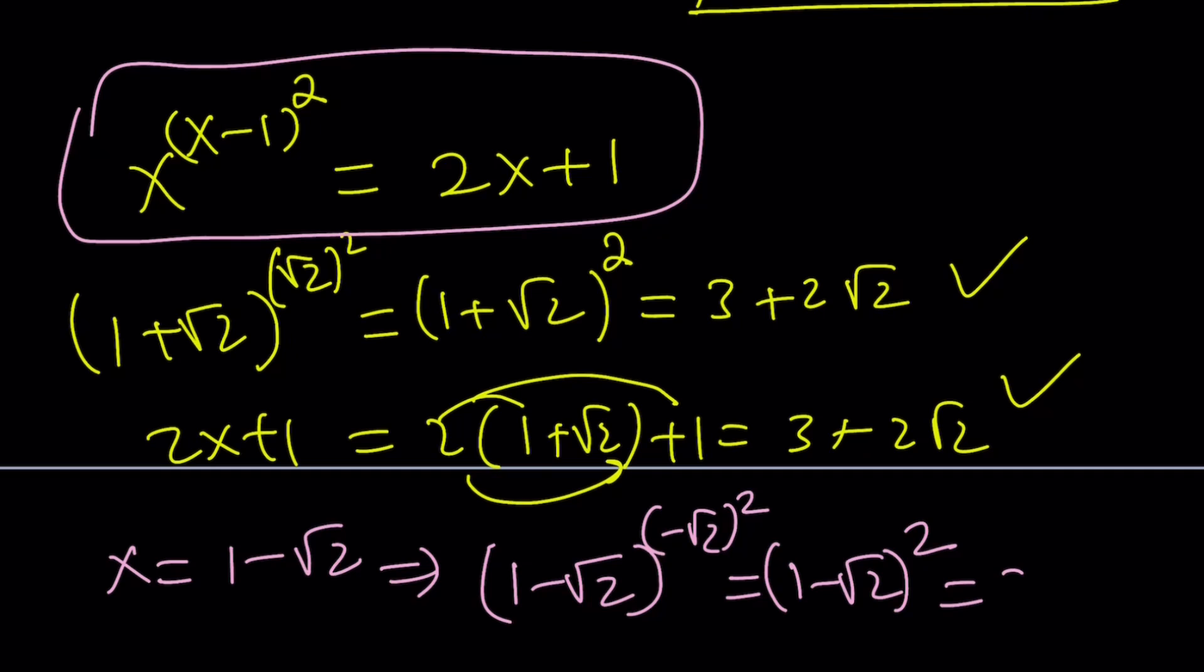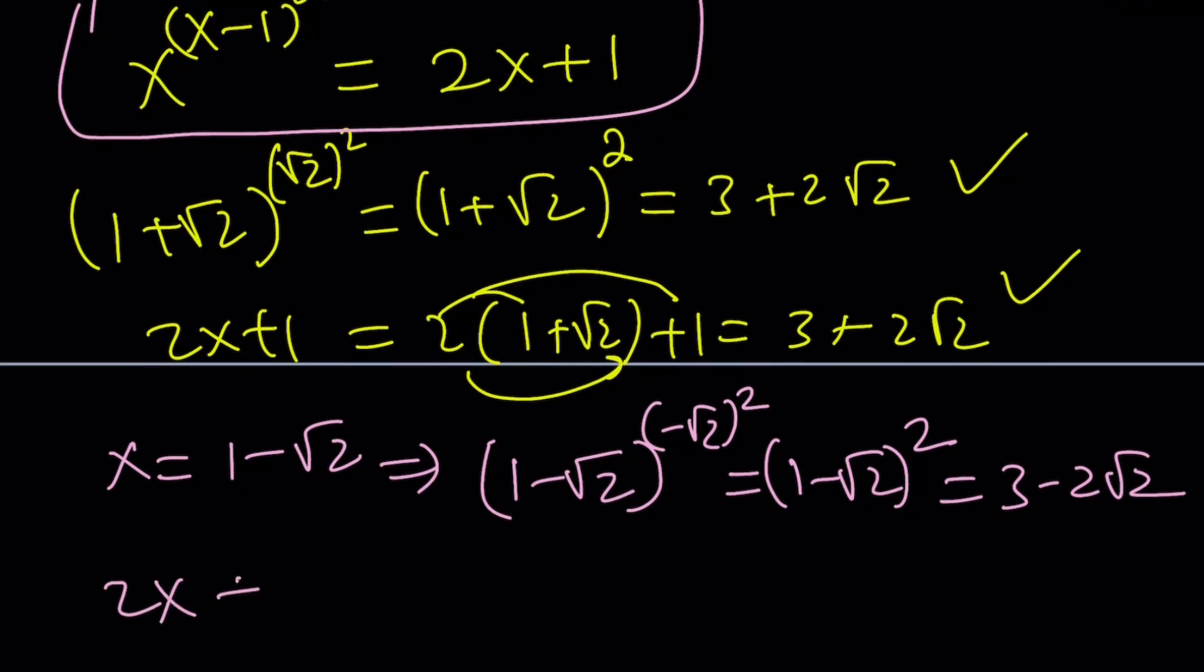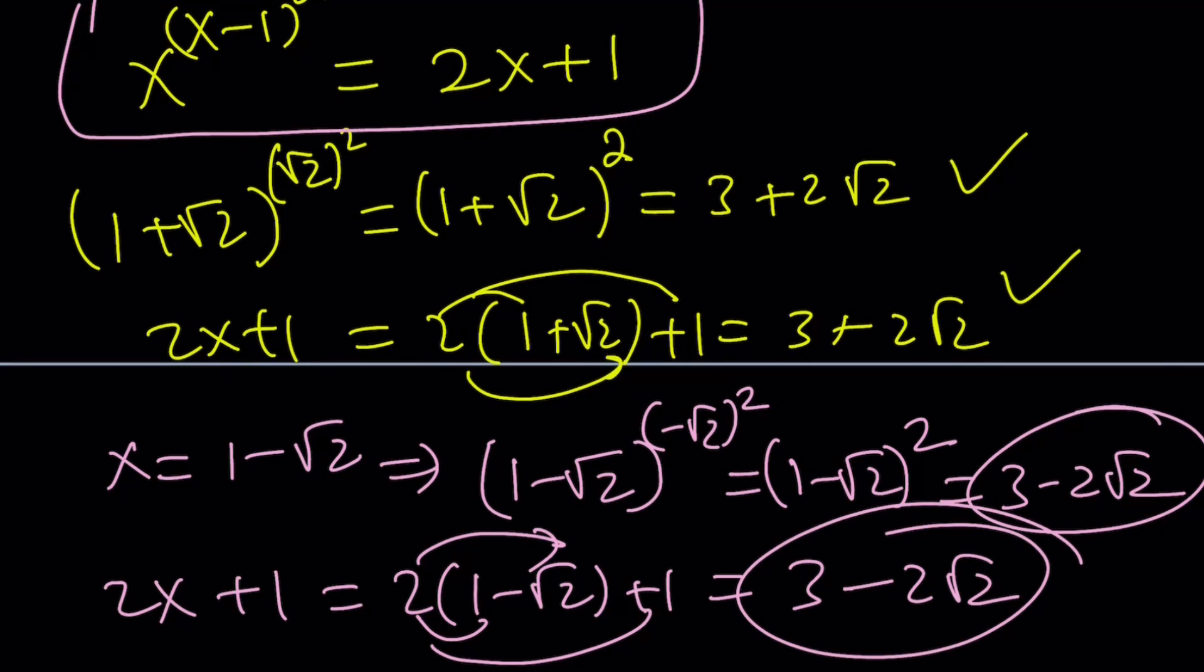And this gives you 3-2√2. So that's what we got from the left-hand side. And if you check the right-hand side by replacing x with 1-√2, you get 2+1 which is 3, minus 2√2. And these two values are the same. So check, check.